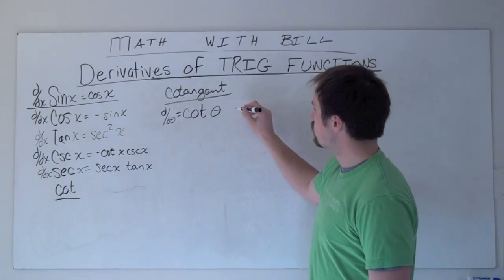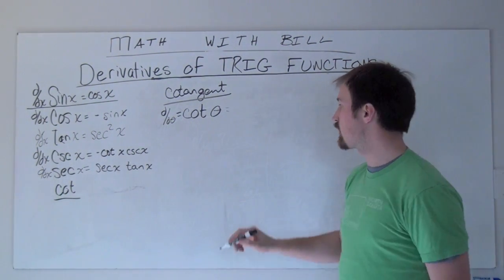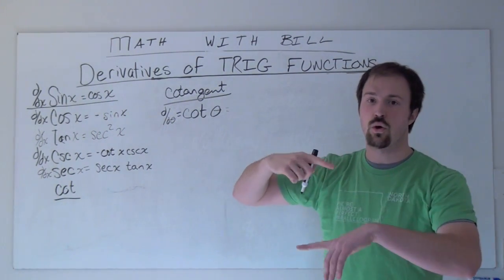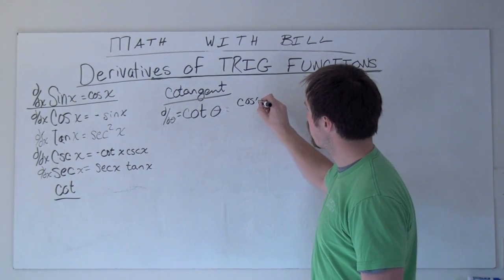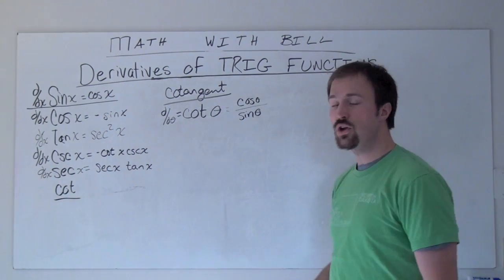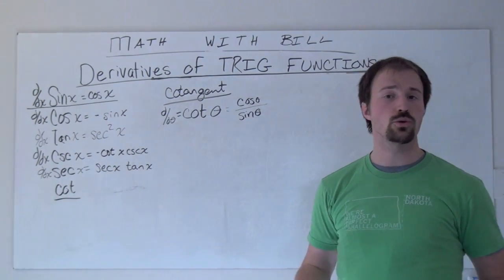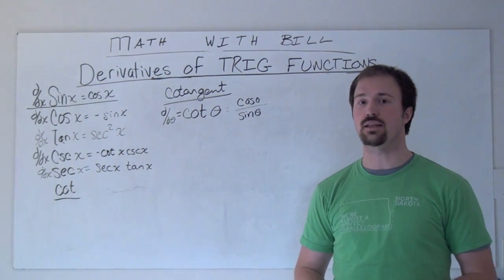Now, one way to describe cotangent of theta directly would be to use its quotient property, or quotient identity, of it being cosine theta divided by sine theta. And we could go through and use the derivative property for quotients, and that would give us the same answer, but I've got a quicker way to get there,